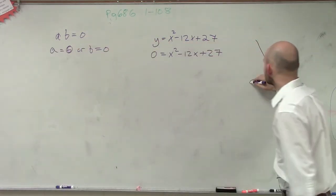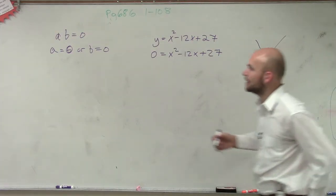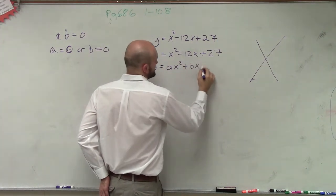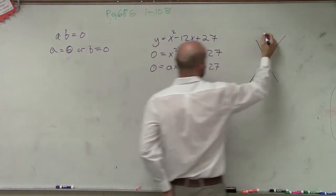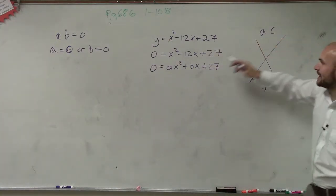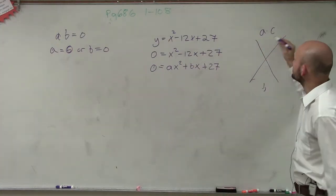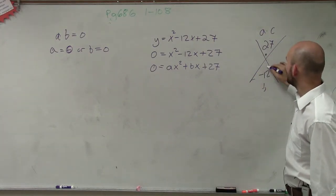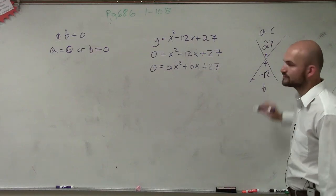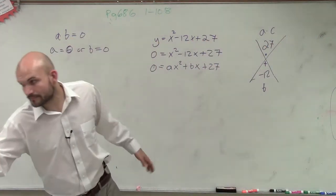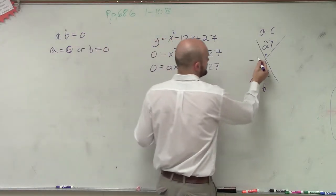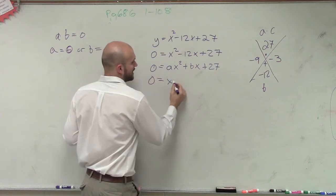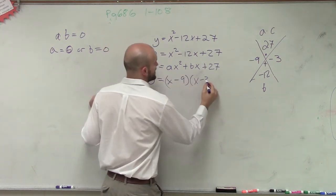Now, you should hopefully by this point remember to do it in your head. But if we need a little more practice, we can go back to our form: ax squared plus bx plus c. And remember, this is always a times c over b. So a times c in this case is 1 times 27, and then b is negative 12. So what two numbers multiply to give you 27 but add to give you negative 12? The factors of 27 are negative 9 and negative 3. So therefore, 0 equals x minus 9 times x minus 3.